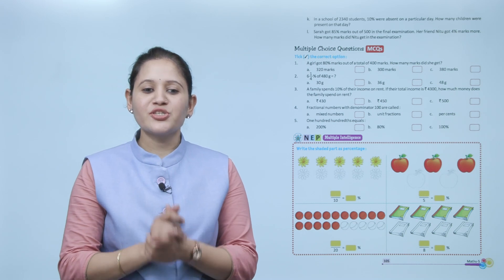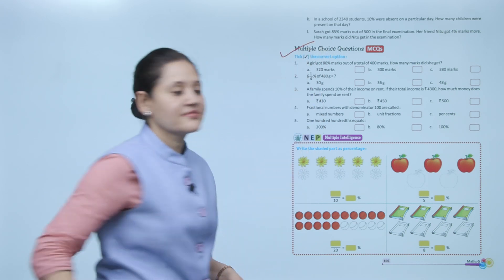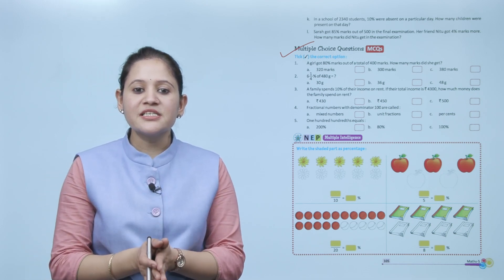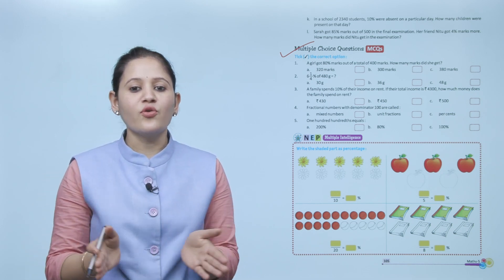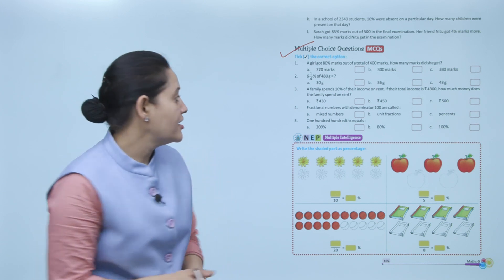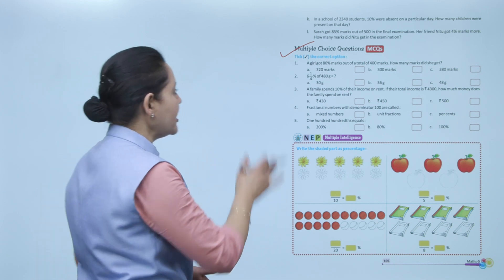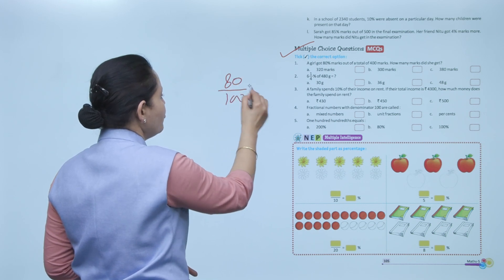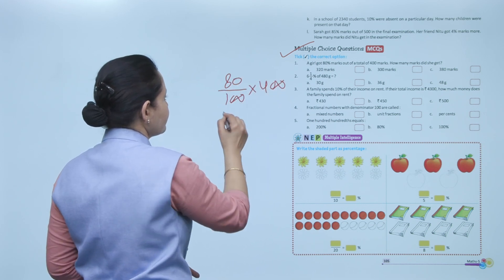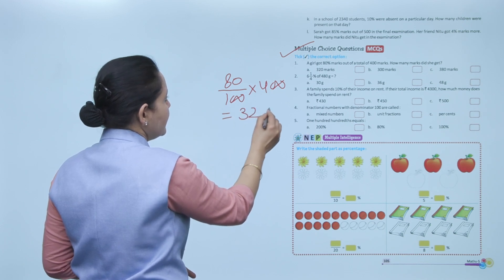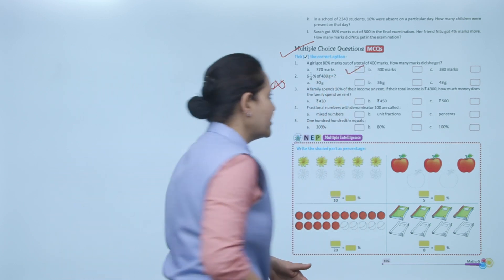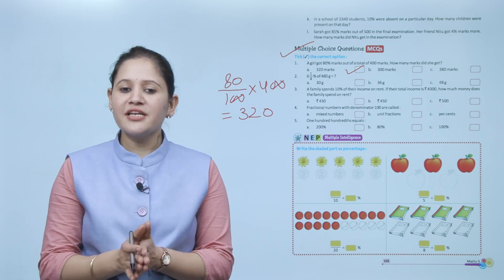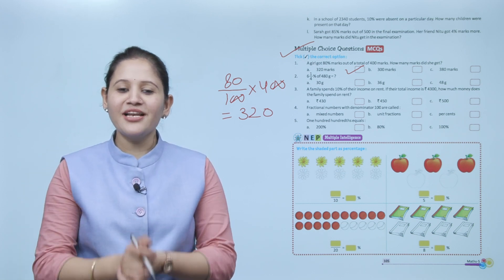Next are multiple choice questions. A girl got 80% marks out of a total of 400 marks — how many marks did she get? Find 80% of 400: 80/100 × 400 = 320. So option A is correct — she got 320 marks. Here we end the chapter; I hope you understood it well. Now go practice!